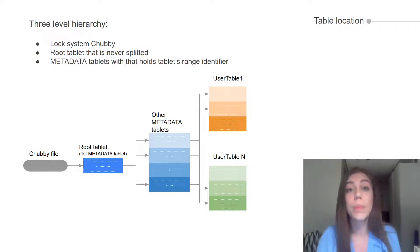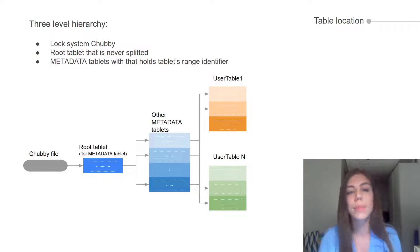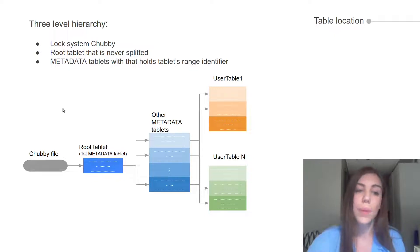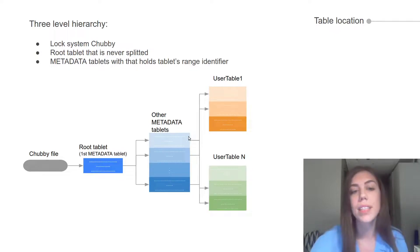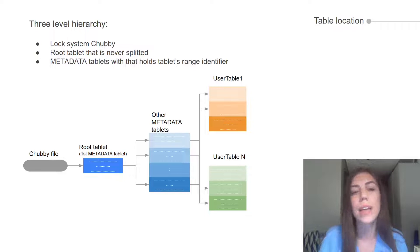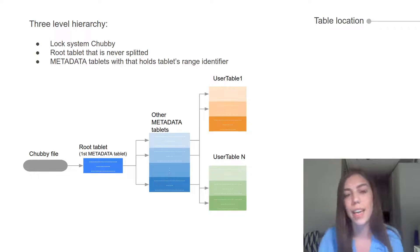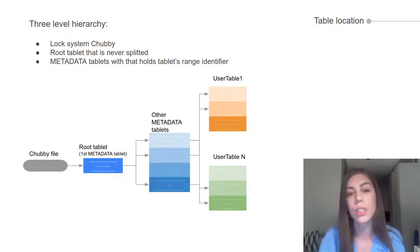Users need to be able to find those tablets. For this, Bigtable uses a three-level hierarchy similar to a B+ tree and uses a metadata table. The first level is Chubby, where a Chubby file holds the location of the root tablet. The root tablet has the locations of metadata tablets, and each metadata tablet leads to a user table. On the first lookup, a client needs three network round trips; after that, the tablet location is cached. The metadata table also has a role in recovering failed tablets.